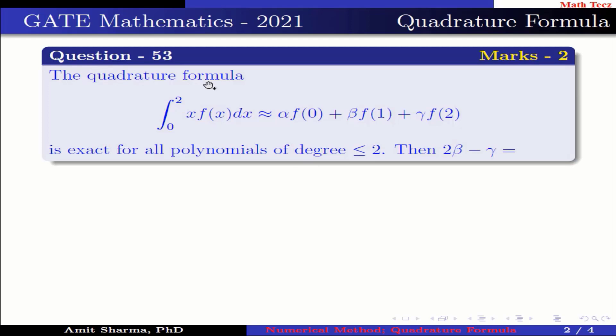The question is: the Quadrature Formula integration from 0 to 2, x f(x) dx is equivalent to α f(0) plus β f(1) plus γ f(2), is exact for all polynomials of degree less than or equal to 2. Then 2β minus γ equals what?